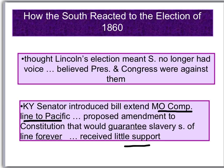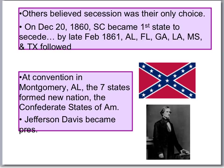Because of Lincoln's election, many people in the South — especially in South Carolina — believe their only choice is to secede. On December the 20th, 1860, South Carolina calls a state convention and votes to leave the Union, becoming the first state to leave. By late February of 1861, they are followed by Alabama, Florida, Georgia, Louisiana, Mississippi, and Texas. These states get together at a convention in Montgomery, Alabama, and form a new nation called the Confederate States of America, naming Jefferson Davis as president.